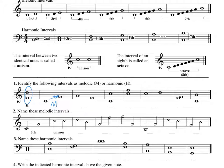We're going to put an M for melodic. I want you to draw an arrow if it goes like this and write an M under it. If it's on top, we're going to circle it and write an H. These two are stacked like that — that's actually harmonic.